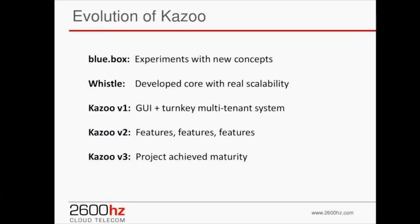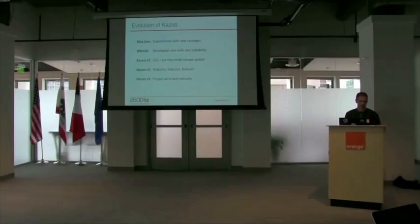Kazoo V2 was a big feature push. Nobody wanted to use us because we couldn't tick off the 50 features that Broadsoft or Metaswitch had, even though customers only used three or four of them — they just wanted all the checkboxes. So it was a big push to get those checked so people would see this as a usable platform. Now with Kazoo V3, the focus is on polish, maturity, and making this a commercial-grade project — giving it a more professional presentation rather than the traditional open-source project look.